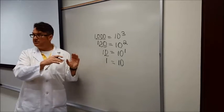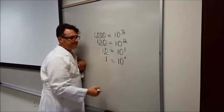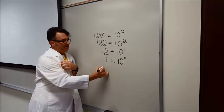then that would be 10. Then there's no place to move the decimal, right? So since there's zero places to move the decimal, it's 10 to the zero, right? Okay, so watch this.